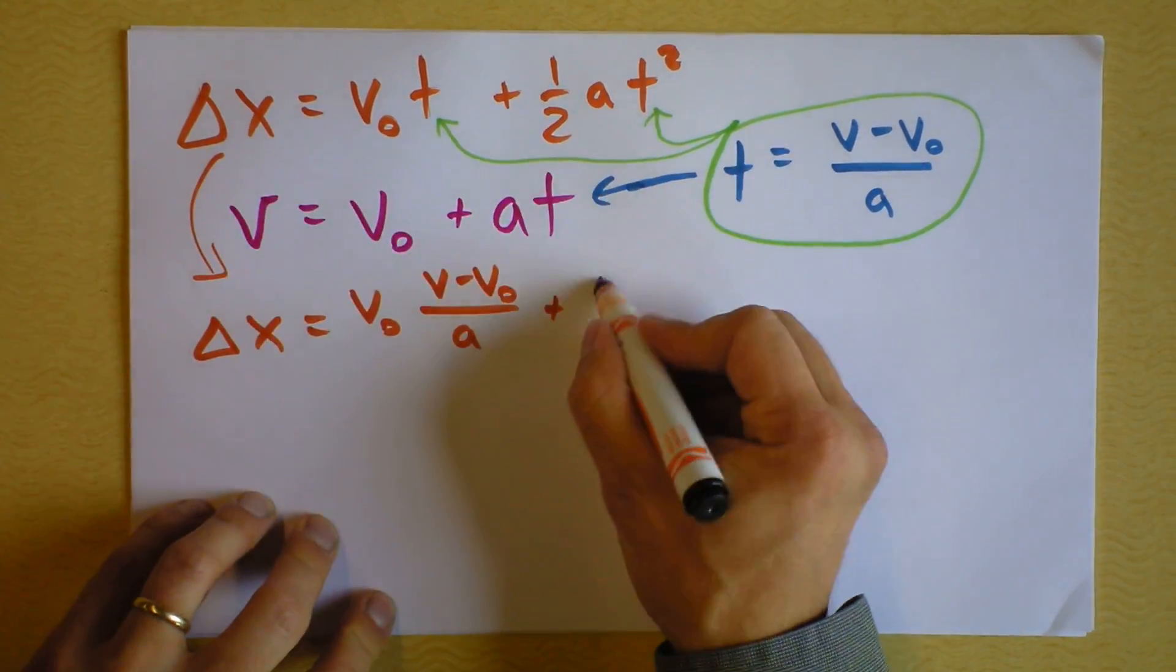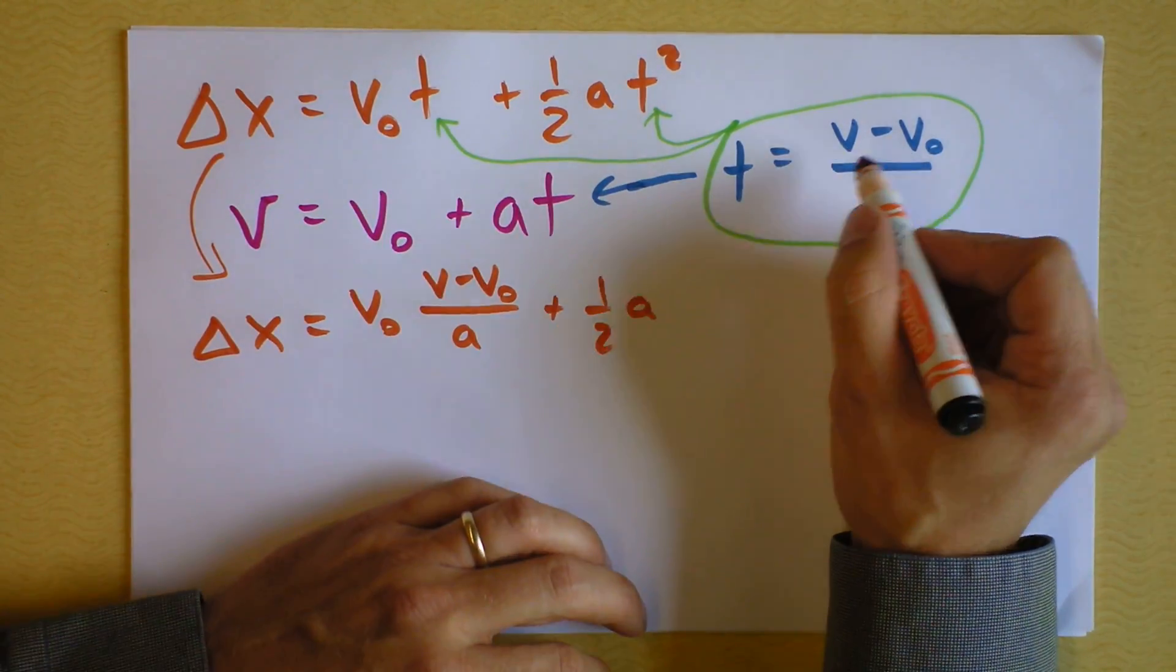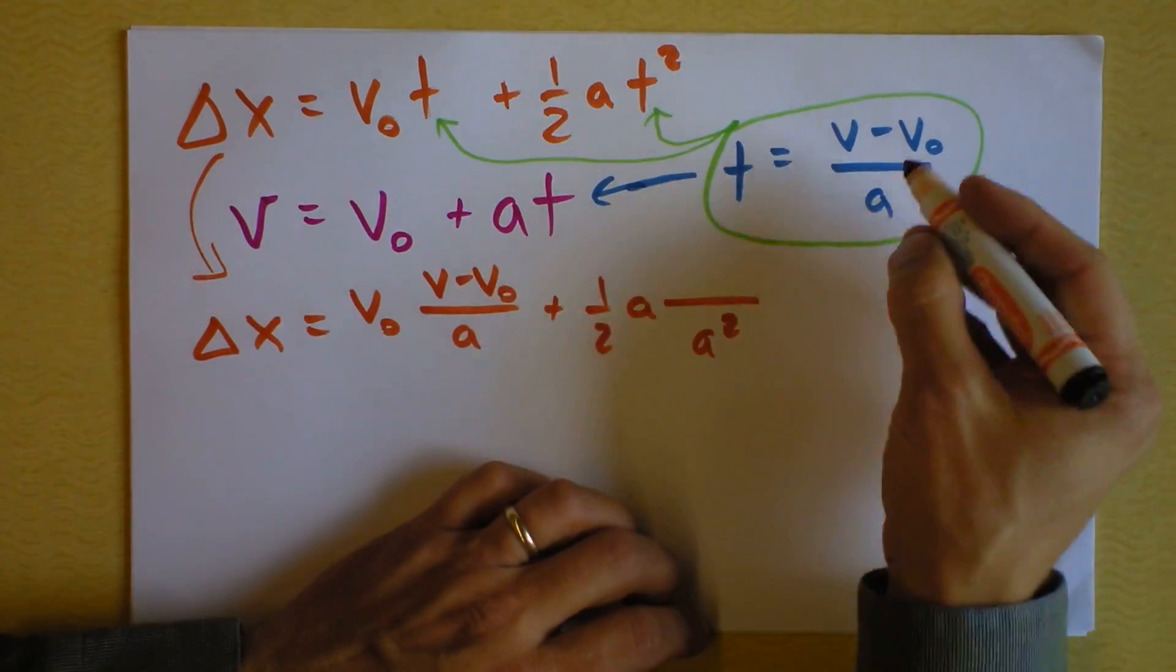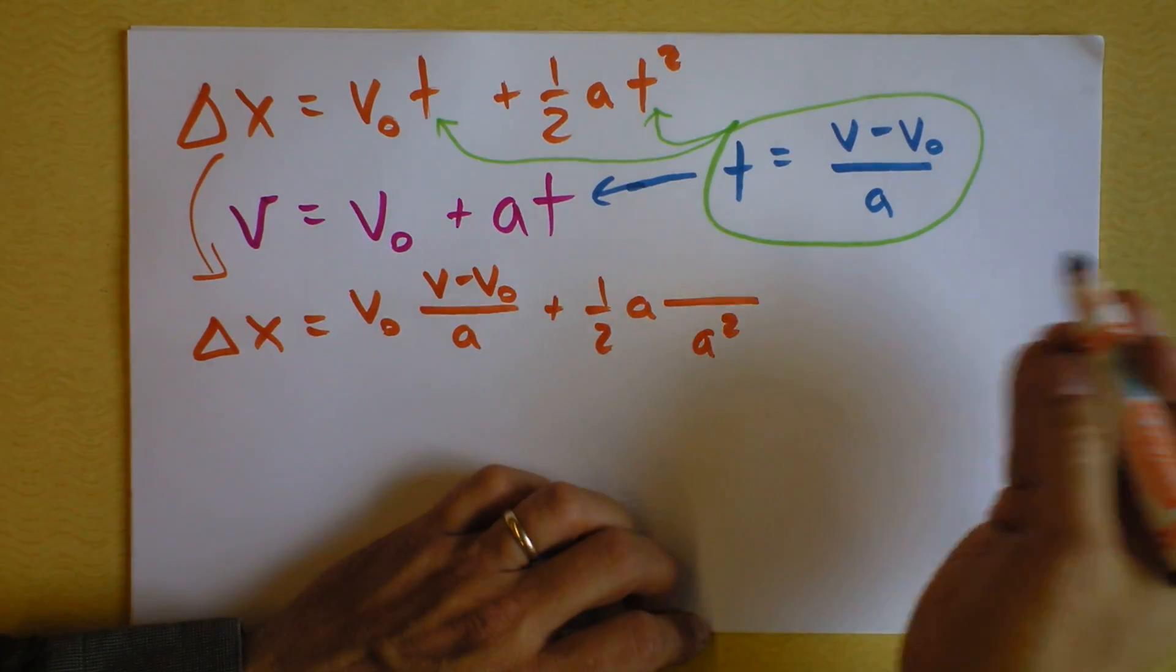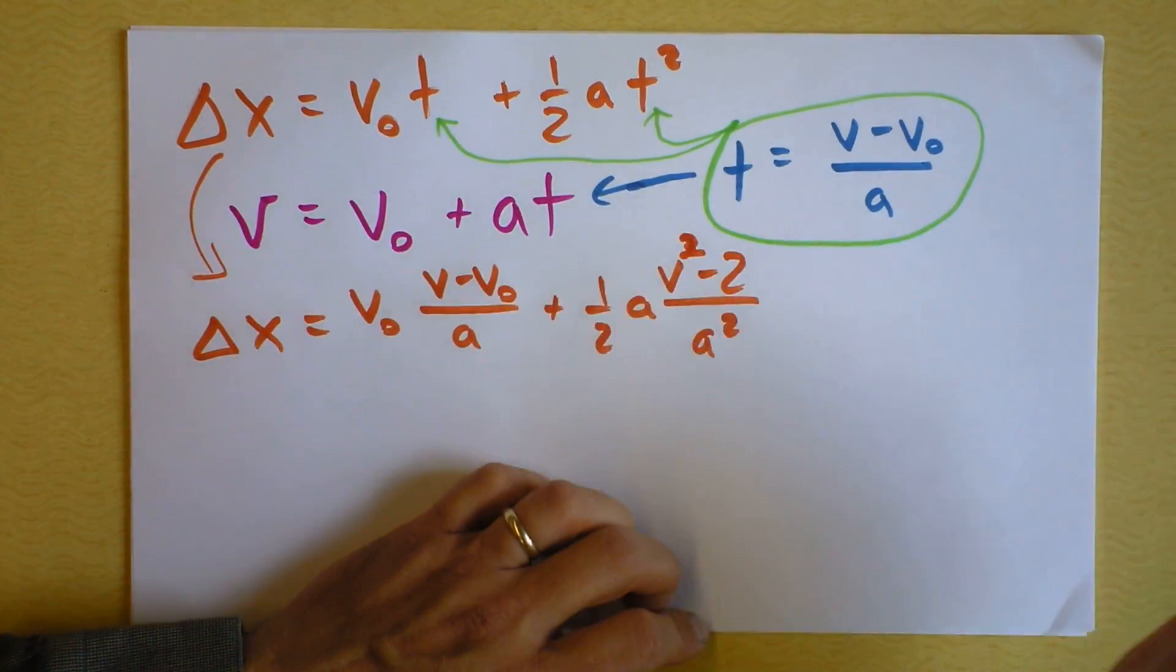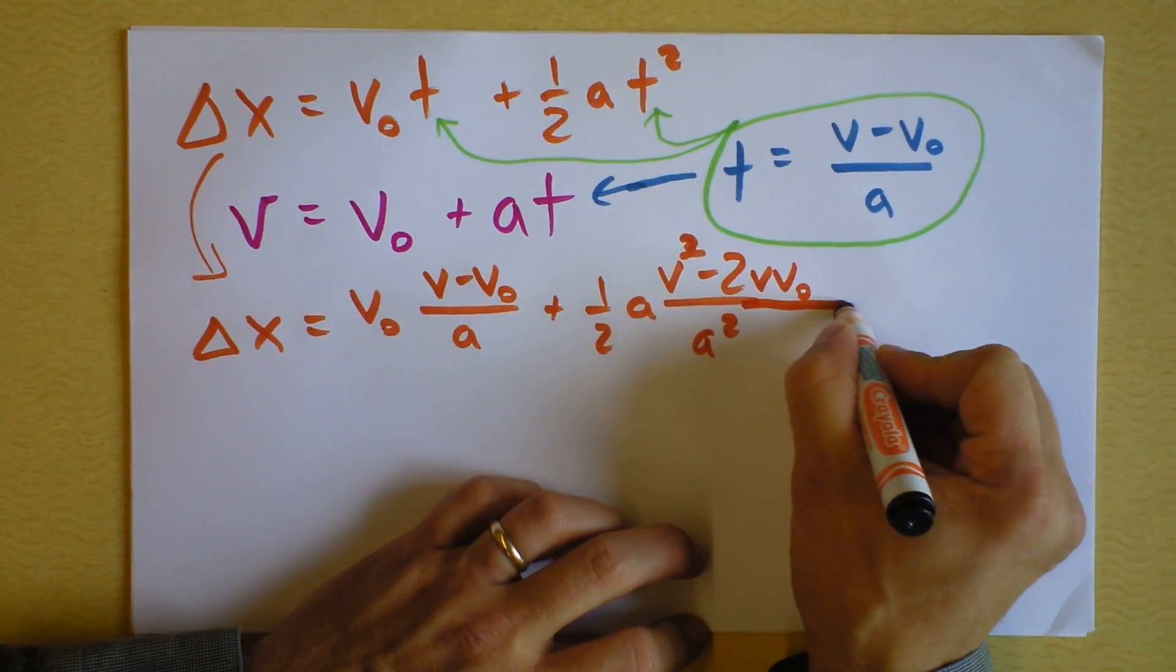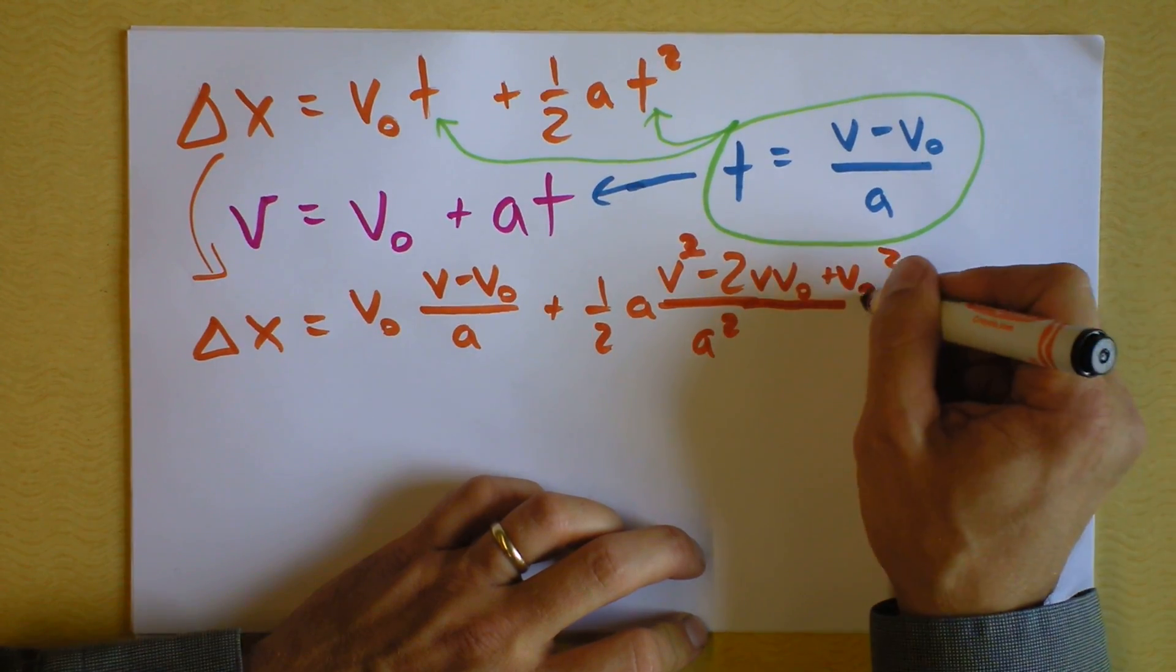And then I have to go to this next term, which says one-half a times—now, that stuff squared. I'm going to go ahead and square that stuff right now. In the denominator, I get a squared. In the numerator, I'm going to get... Oh, gosh, I've got to foil that stuff. Binomial expansion or some nonsense. I'm going to get v squared. And then I'm going to subtract two—that's a square there. I'm going to get 2v v-naught, right? That's the cross term. And then I also have to add on v-naught squared.